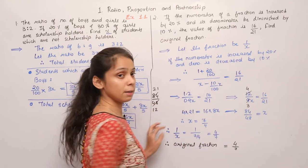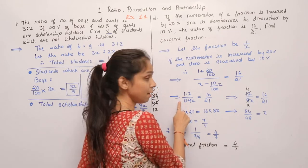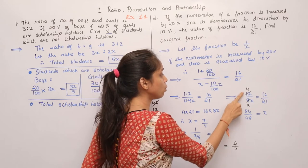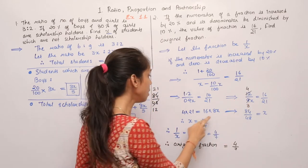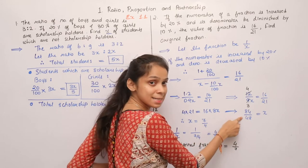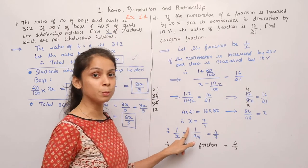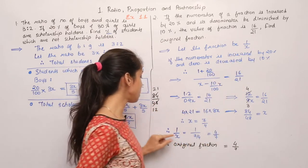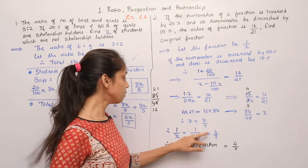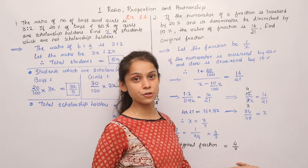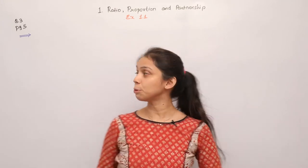Therefore, original fraction is 4 by 7. To summarize: wrote fraction as 1 by x, added 20% to numerator, subtracted 10% from denominator, got decimals, removed by multiplying by 10, divided by common factor, isolated x, and since x is the denominator, took reciprocal of 1 upon x to get the original fraction 4 by 7.